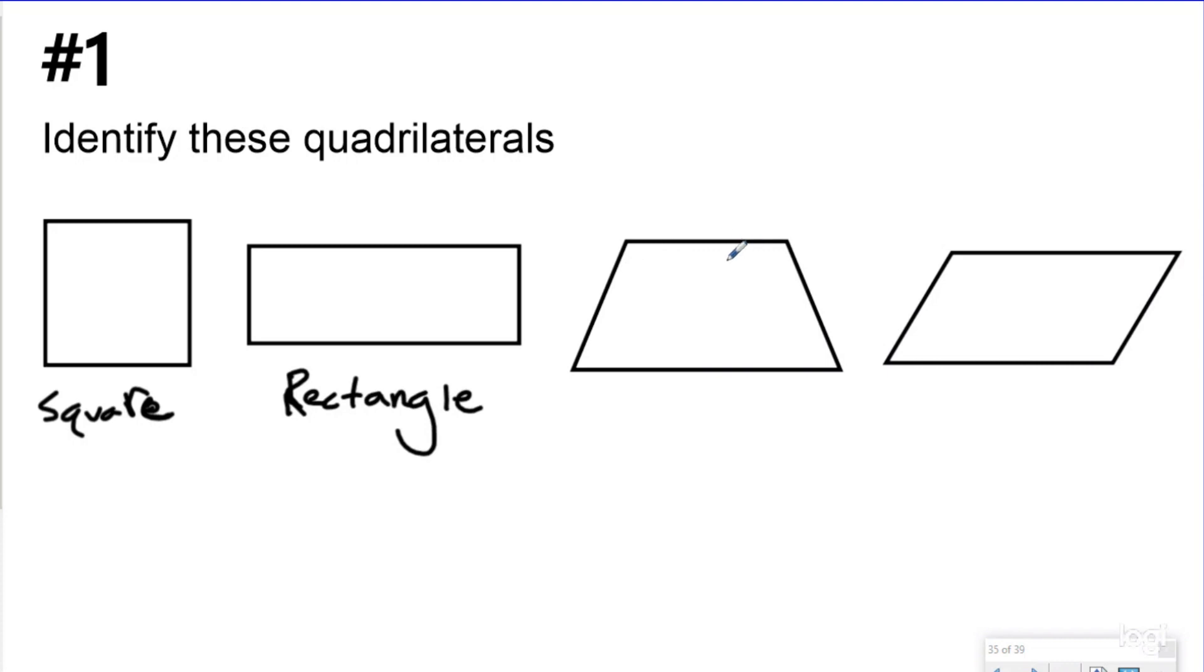Right here I see a quadrilateral with exactly one pair of sides that will never meet if they continue to go, and I know anytime I see a quadrilateral with exactly one pair, this has to be a trapezoid. And then right here I see a quadrilateral with two pairs of sides that will never meet if they continue to go on forever. I don't see any square corners and not all the sides are congruent, which means this has to be a parallelogram.